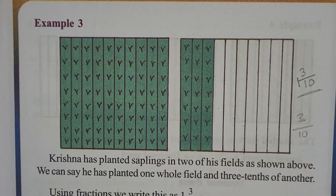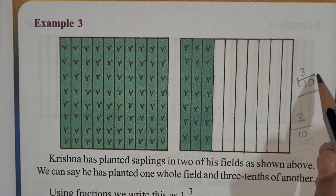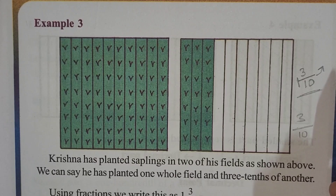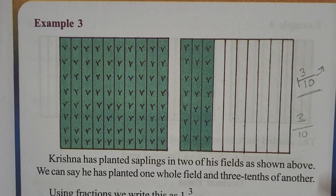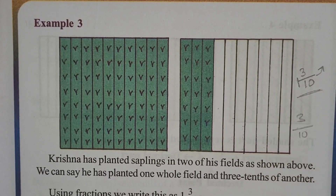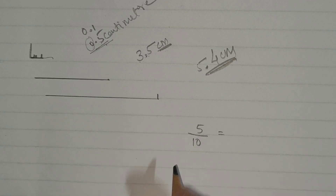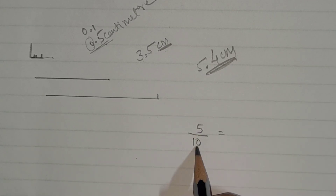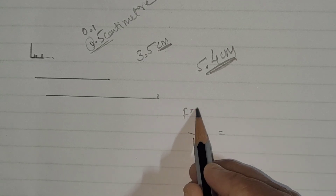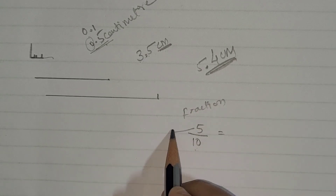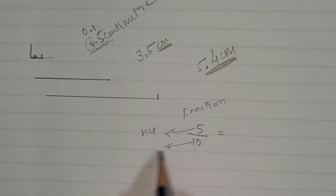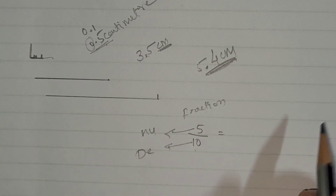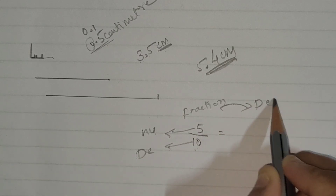We can write this in another form - we call it decimal form. Before writing this, let me show a small example. Five by ten - this is the fraction form. You know that this is the numerator and this is the denominator. How are you going to write it in decimal form?